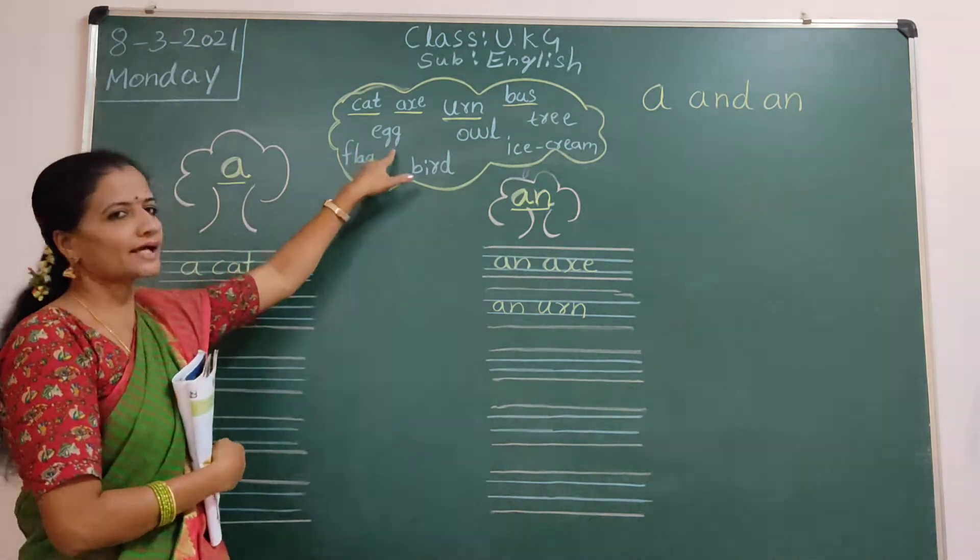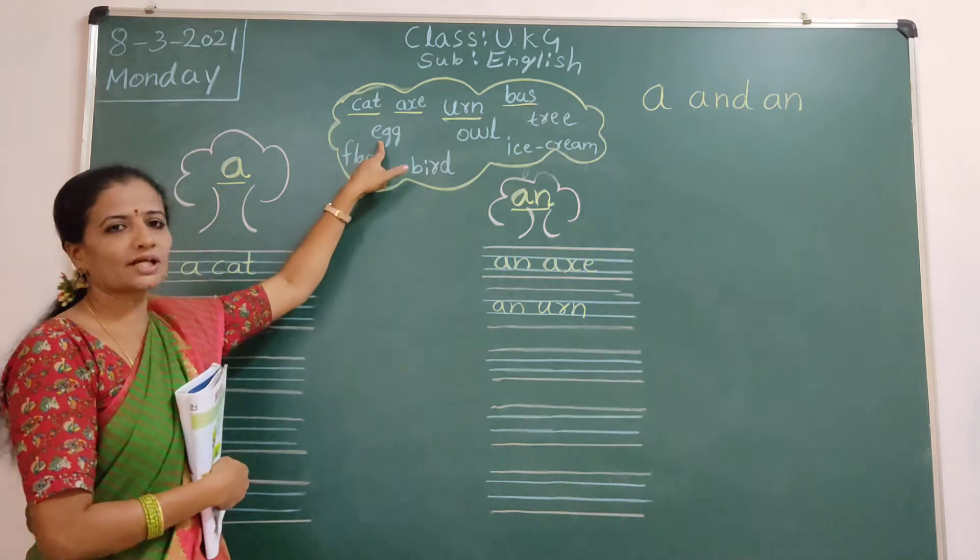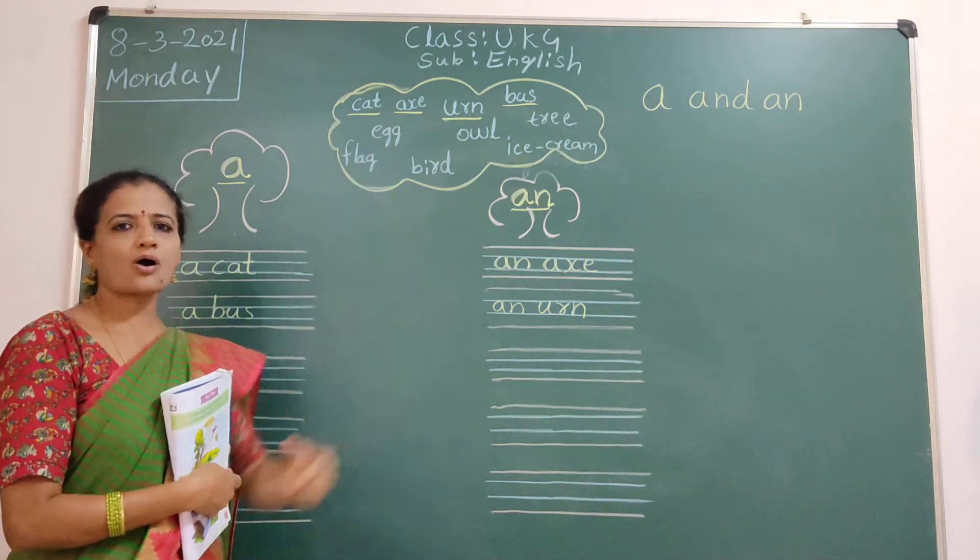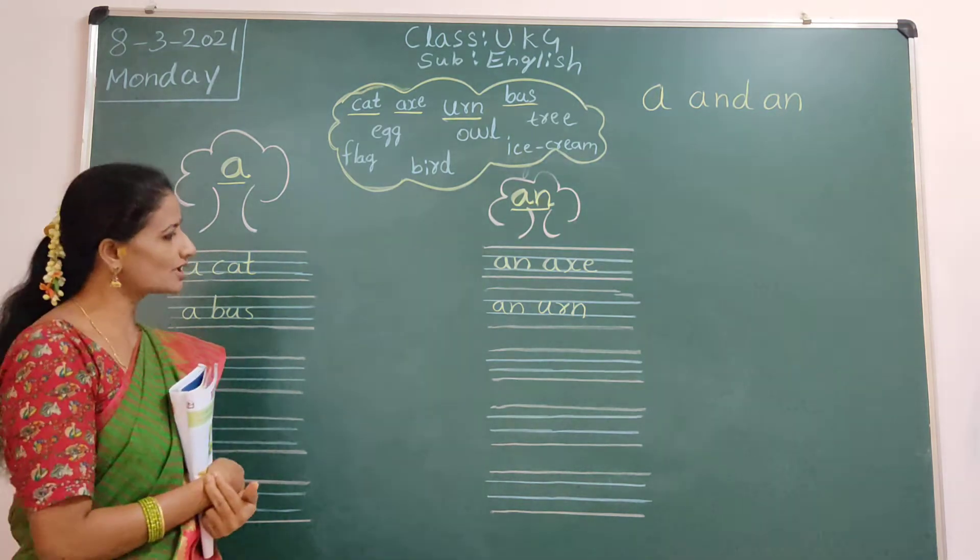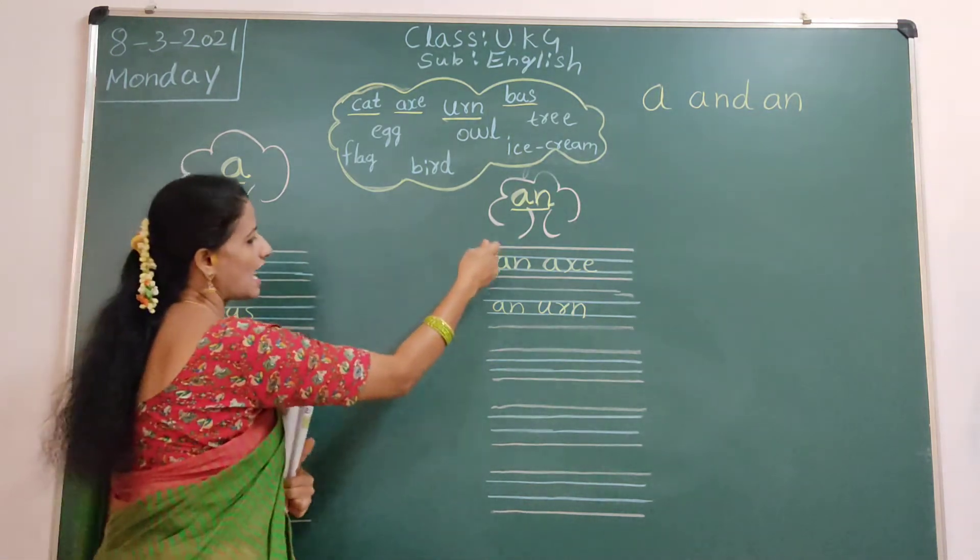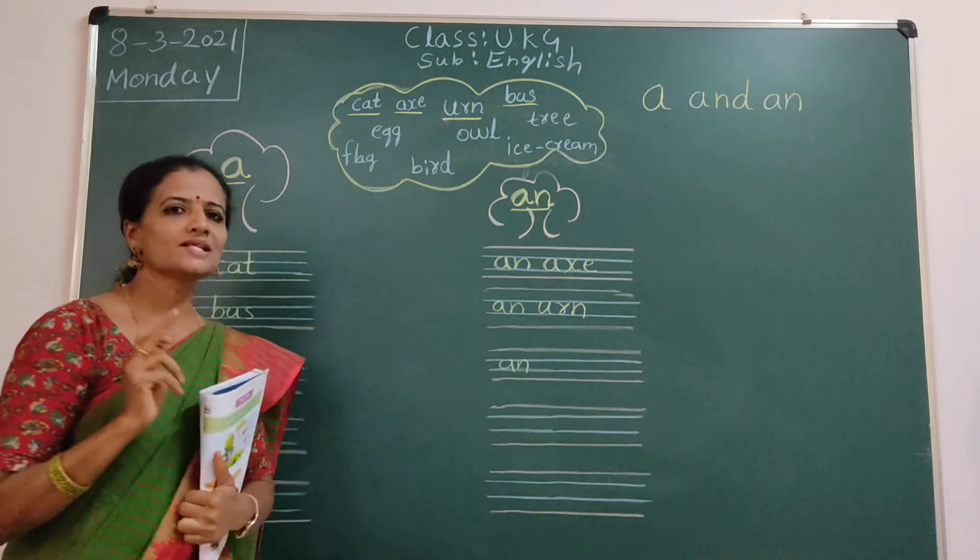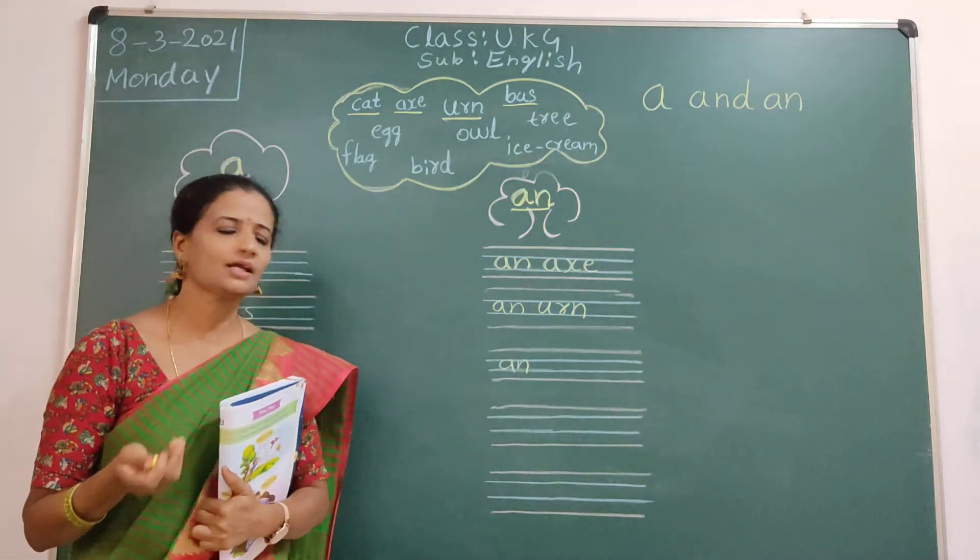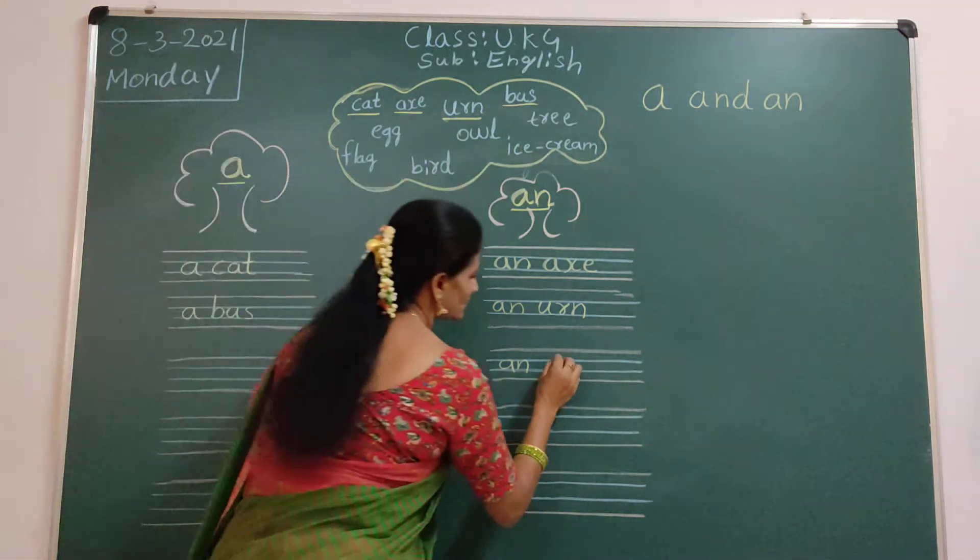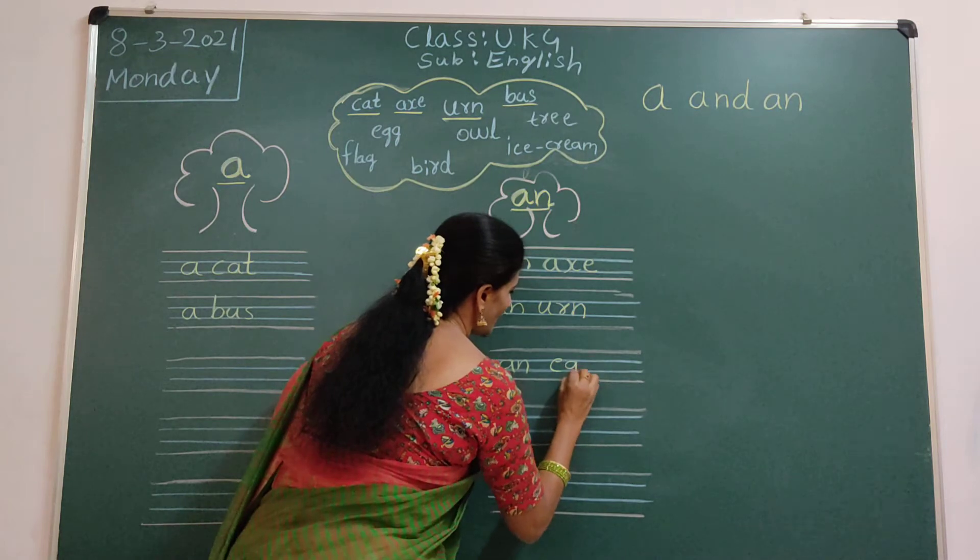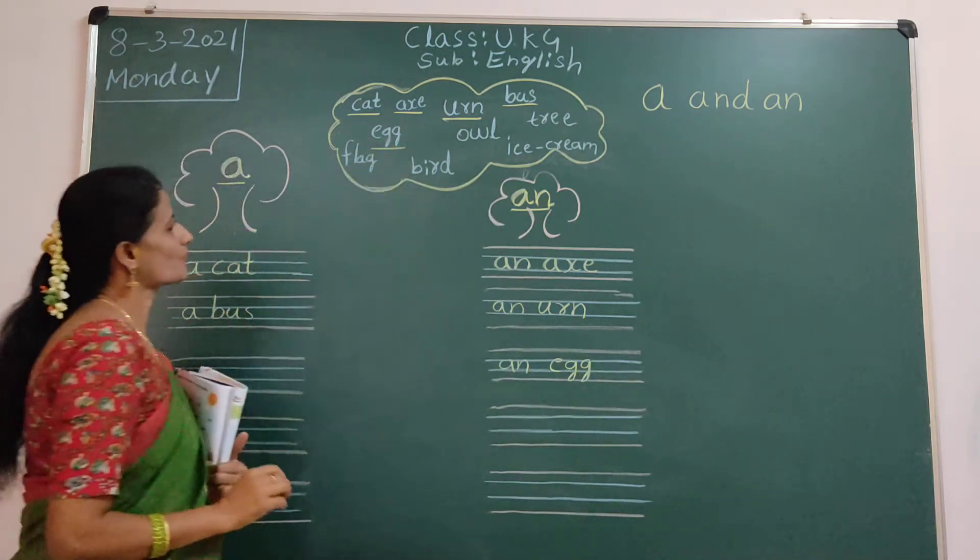Next, egg. E, G, G, egg. Okay. Starting letter. Start from vowel sound. A, E. Okay. So, because, we will write An. And vowel. Starting letter. Vowel sound field from means we will use An. Okay. And egg. And egg. So, egg also finished.